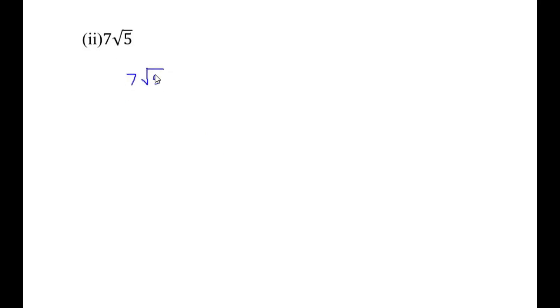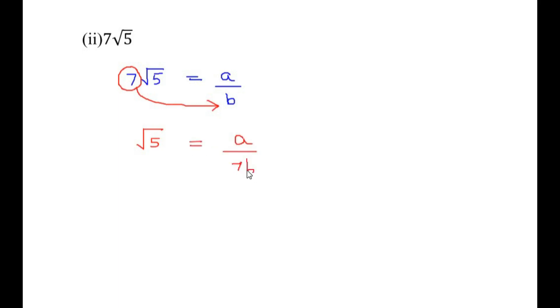Here you have to prove that 7 times square root of 5 is irrational. We contradict the statement and assume 7 root 5 equals a over b, where a and b are co-primes. Cross multiplying and sending 7 to the other side gives square root of 5 equals a over 7b. The right-hand side is a rational number, while the left-hand side is irrational — irrational cannot equal rational. Hence by proof by contradiction, 7 square root of 5 is an irrational number.